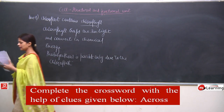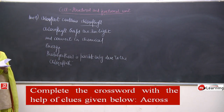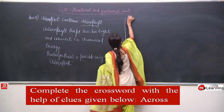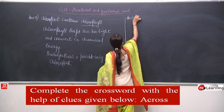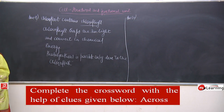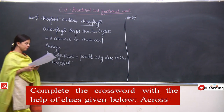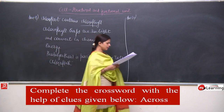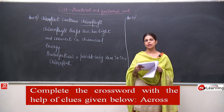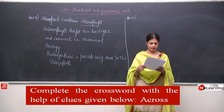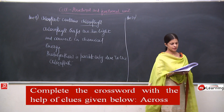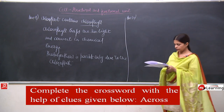Now question number 10, probably the last question of this NCERT topic: complete the crossword with the help of the clues given. Clue 1: this is necessary for photosynthesis — the answer is chlorophyll. Clue 2: formed by collection of tissues — cells make tissues and tissues make organs, so the answer is organ. Clue 3: term for component present in the cytoplasm — cell organelles are present in the cytoplasm.